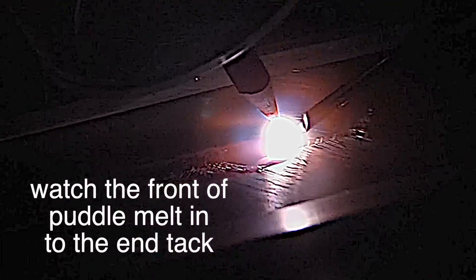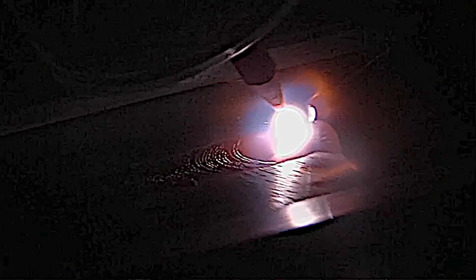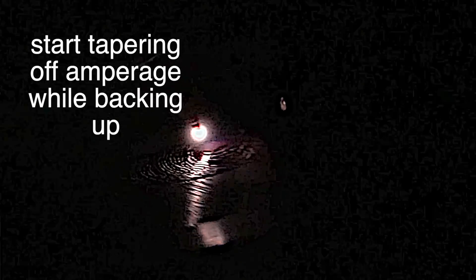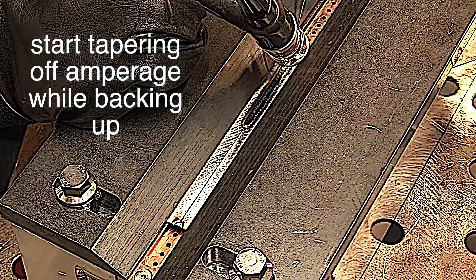Here's what I'm talking about. When I'm coming up on that tack, I watch it as soon as that puddle runs into that tack, I start backing off that amperage and back up the arc a little bit. And this prevents blowing the end away and it prevents defects. Now we're going to watch that again in slow motion because I think that's another valuable lesson there.